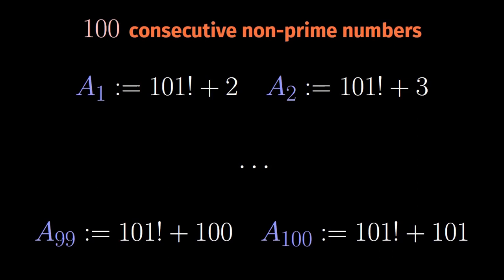As for our proof, we only need to recall the definition of factorial. And then we are practically done. 101 factorial is by definition 101 times 100 times 99 times 98 and so on until 4 times 3 times 2 and the useless times 1.